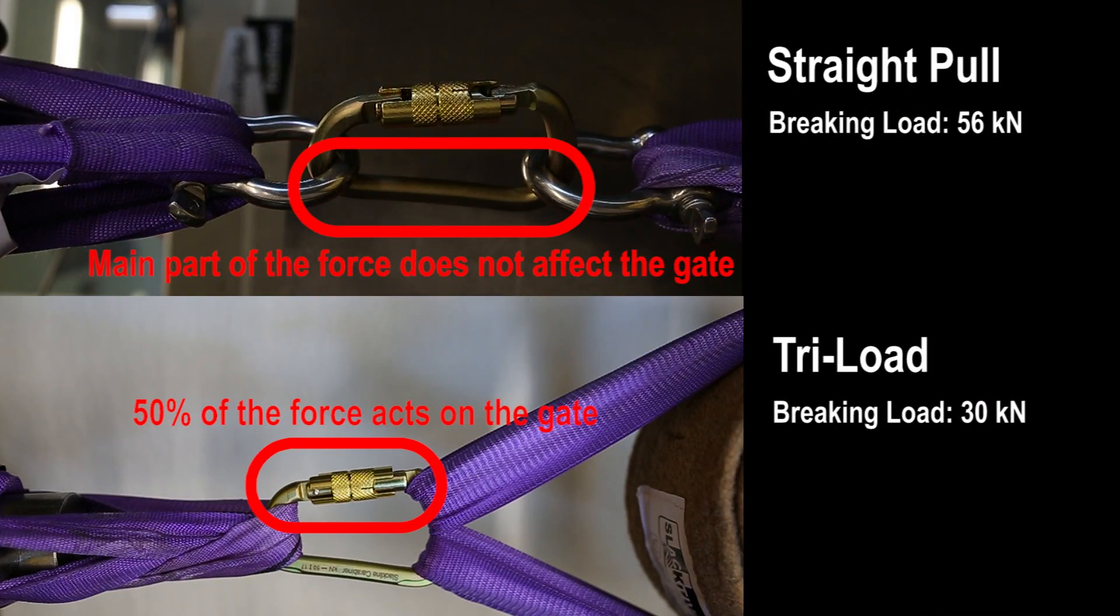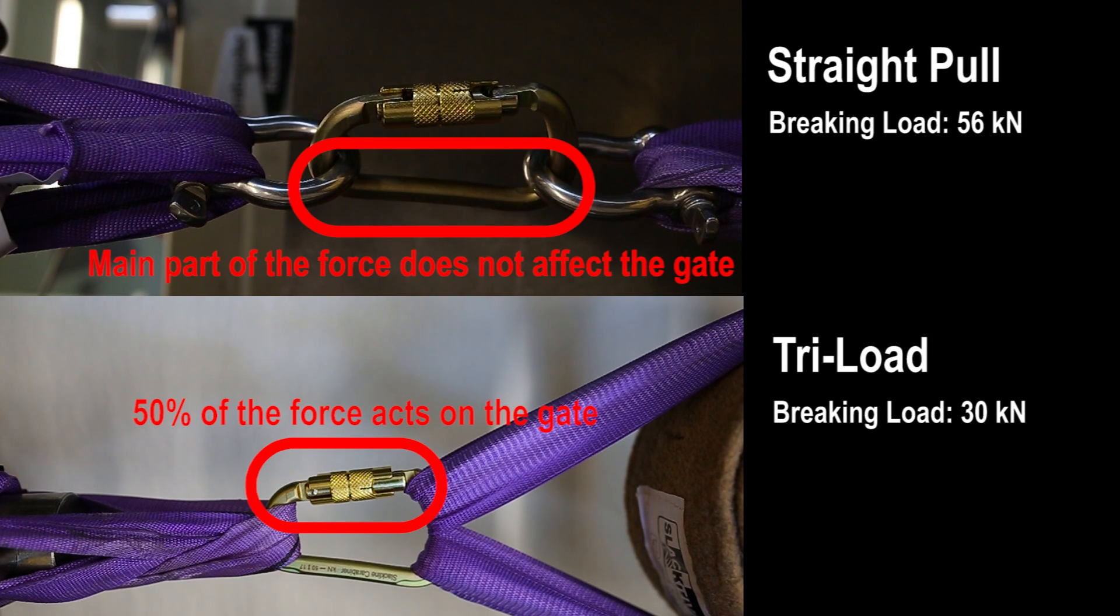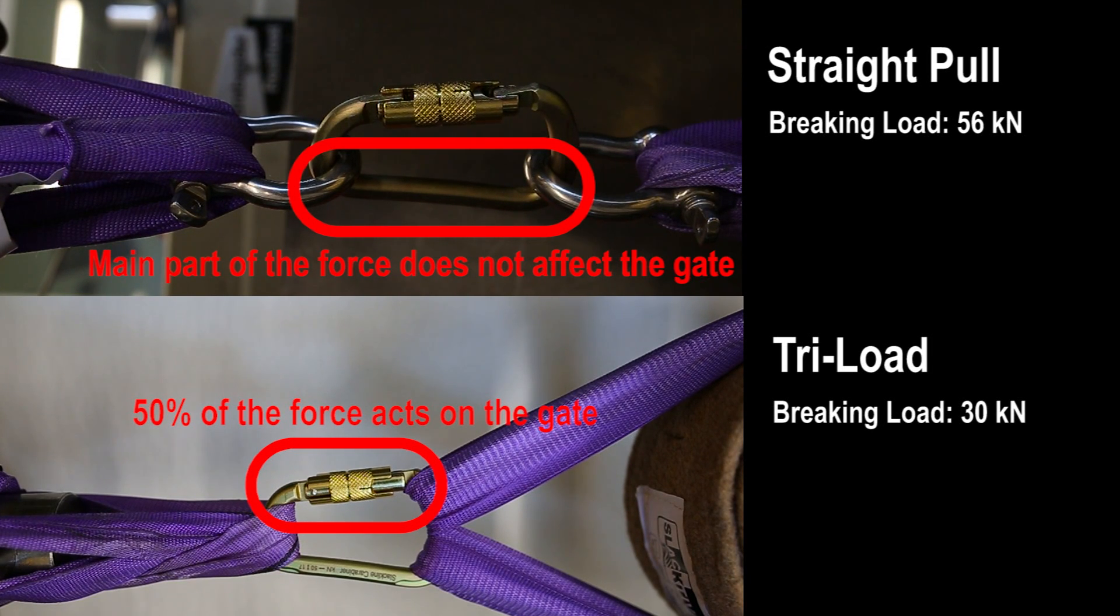The pear-shaped carabiner was, however, massively weakened as now a lot more force came onto the gate.